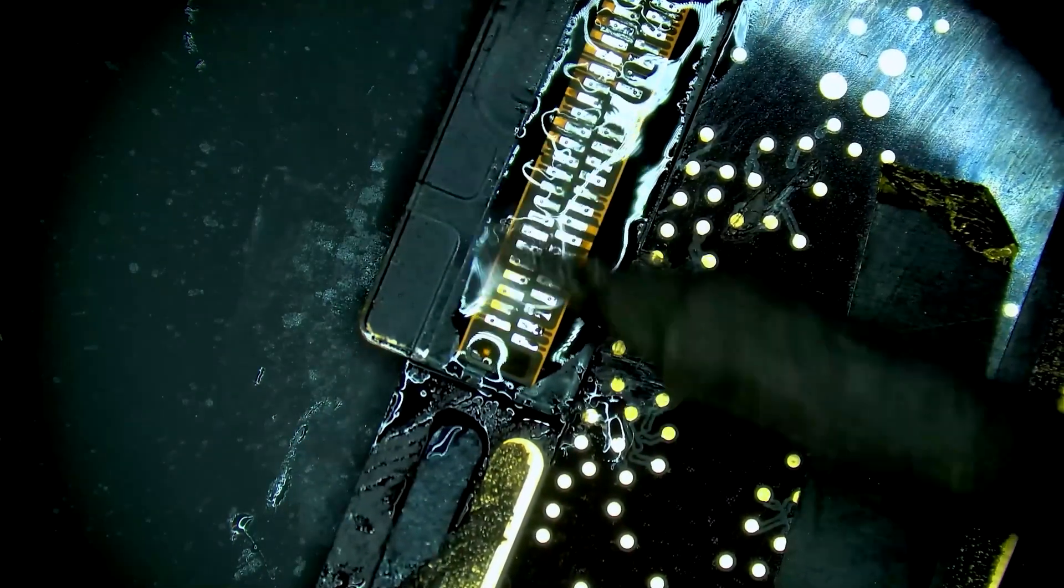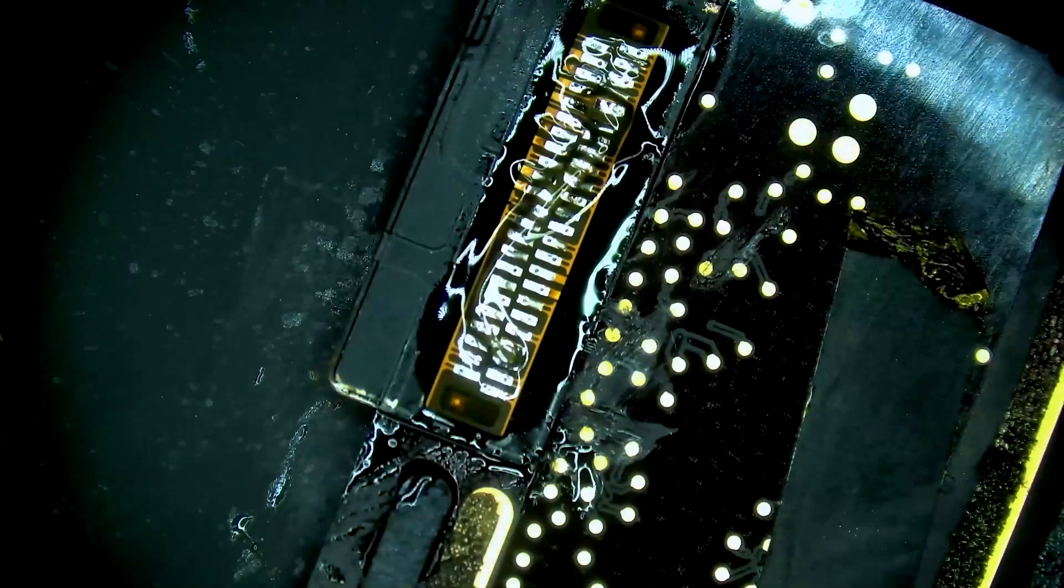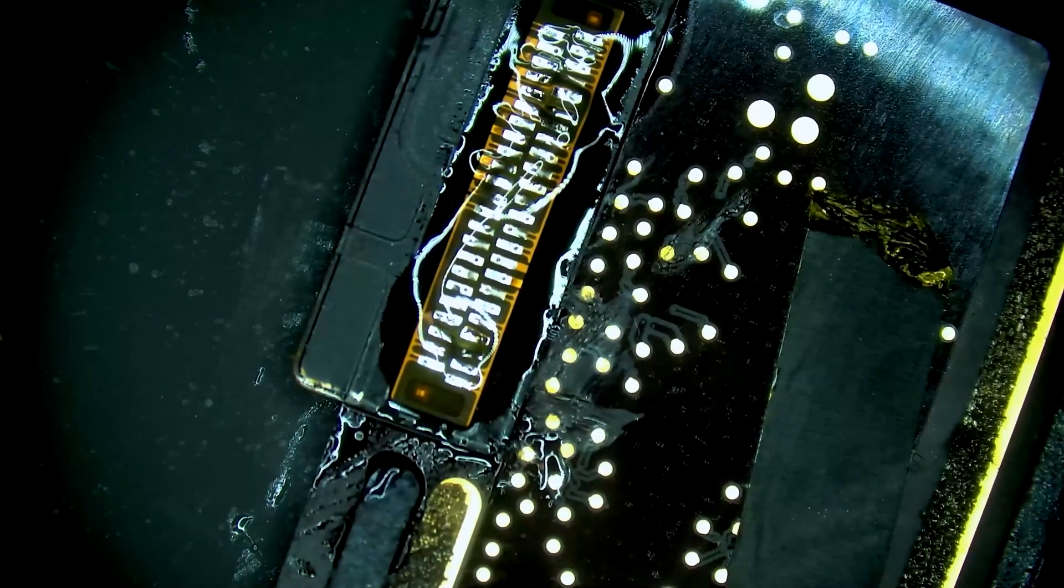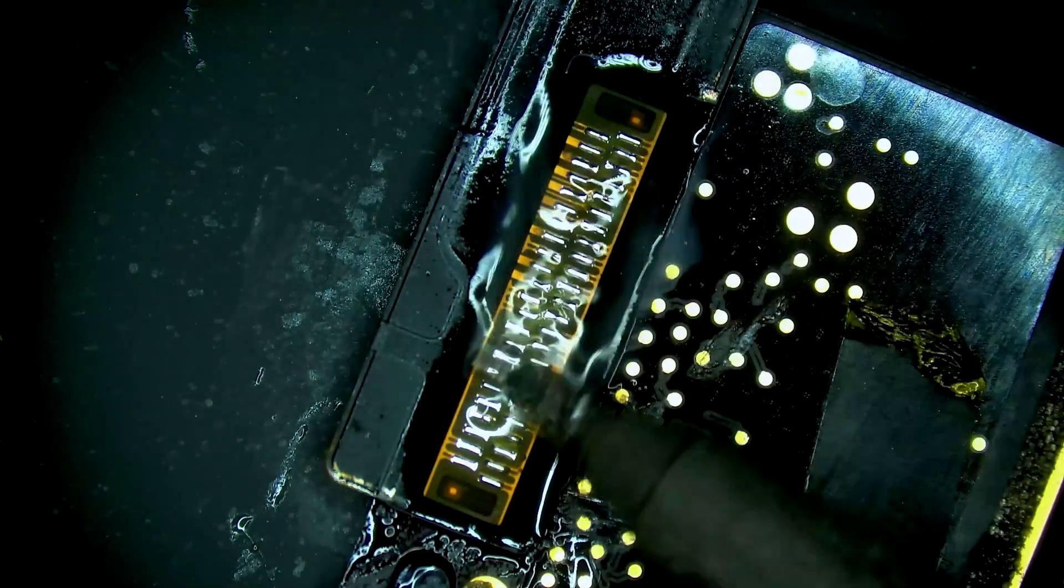Once we have each of the pads connected to the board we can add a little bit more flux and run our iron along the top with some new solder. This is essentially the finishing touch to the repair.